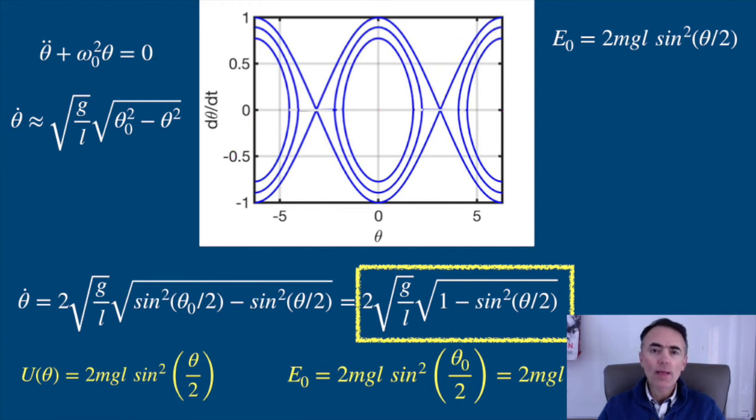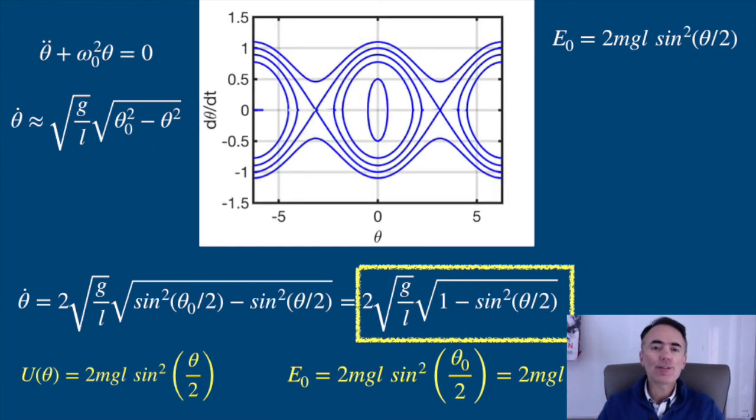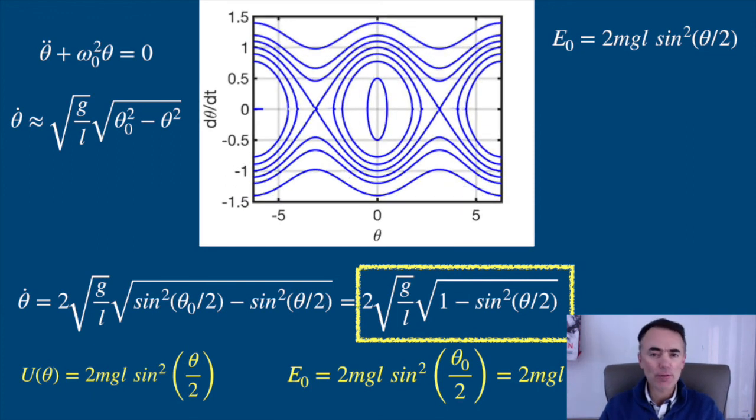For energies greater than E naught, the pendulum goes around and around and it never has a zero velocity. Then the trajectory is not a closed trajectory in phase space. It is an open trajectory. The boundary between oscillatory closed trajectories and non-oscillatory, although periodic, open trajectories passes by the unstable equilibrium points.